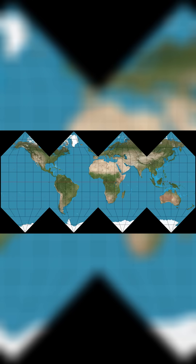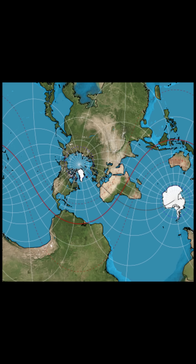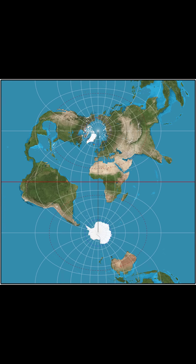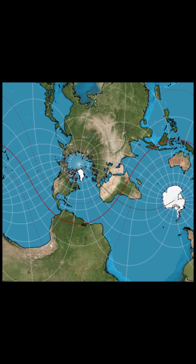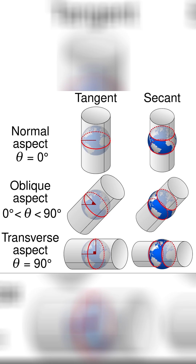Ranking almost every map projection, episode 3, and today we have the oblique mercator projection. Just like the transverse mercator and the regular mercator projection, this is a conformal cylindrical map projection. The oblique mercator is set apart from the normal and transverse mercator because it essentially acts as an in-between those two projections, where the cylinder is put at an angle on the earth.